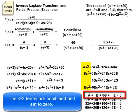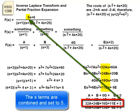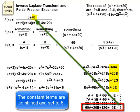The s³ terms are combined and set to 0. The s² terms are combined and set to 0. The s terms are combined and set to 5. The constant terms are combined and set to 6.